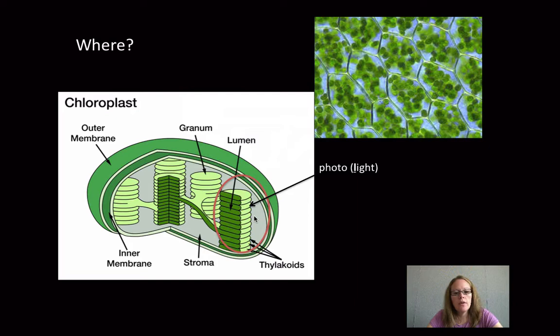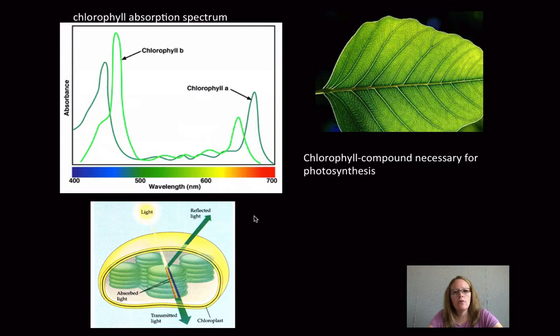So the light reactions or the photoreactions are going to be taking place in these thylakoids, with the lumen and then the thylakoid membrane. Then the synthesis part of photosynthesis is actually occurring in the stroma. It's important to keep those two locations where things are happening as we get into the complexity of photosynthesis.